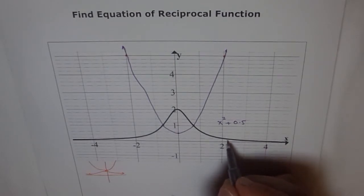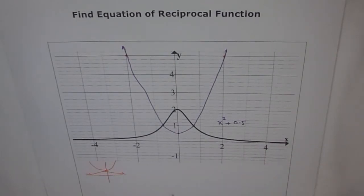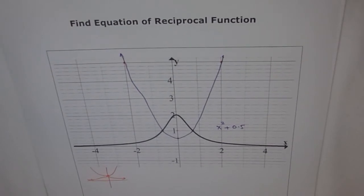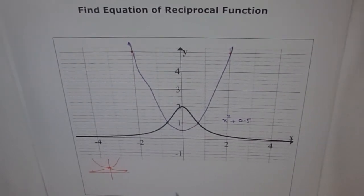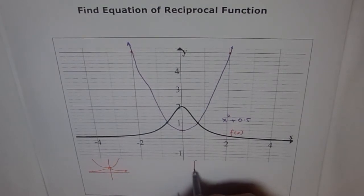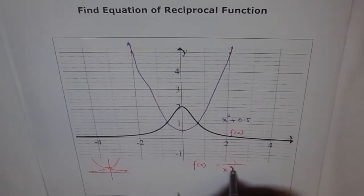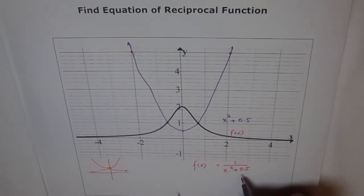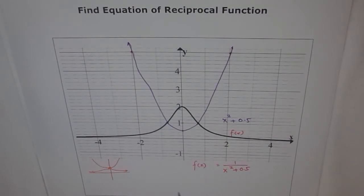The reciprocal function should be, let me write f(x) for the reciprocal function. Let's say this is f(x). So f(x) seems to be equal to 1 over x squared plus 0.5. I could have written half and that's okay, 0.5. That seems to be a good proposition.